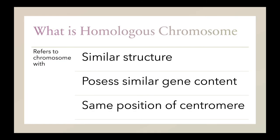What is a homologous chromosome? Homologous chromosomes refer to chromosomes with similar structure, that possess similar gene content, and have the same position of the centromere.